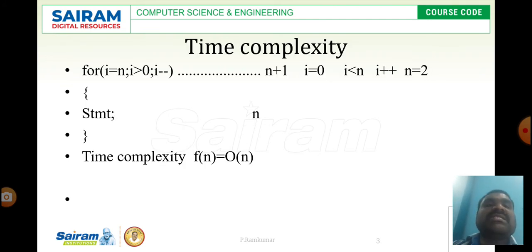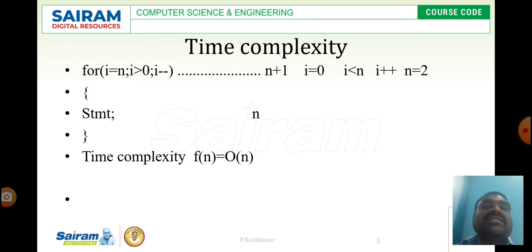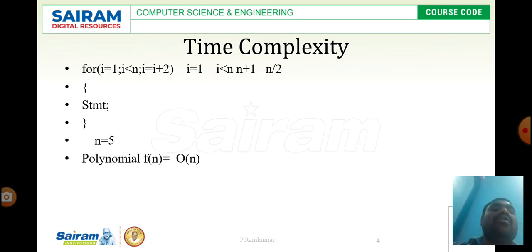Next, for a simple loop: for i equal to n, i greater than 0, i minus minus. Here we use decrement instead of increment. i equal to n executes one unit time, i minus minus executes n times, and i greater than 0 executes n plus 1 times. The statement inside executes n times. Total time complexity is n plus 1 plus n, which equals 2n plus 1, so f(n) is O(n).